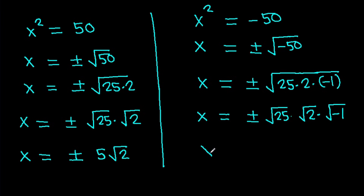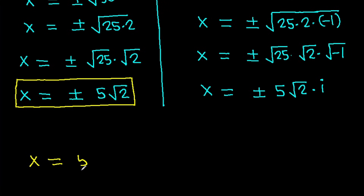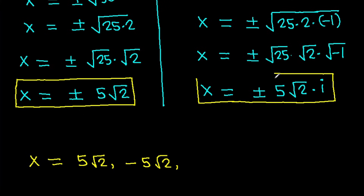And x will be plus minus root of 25 times root of minus 1. And x is plus minus 5 root 2 iota.